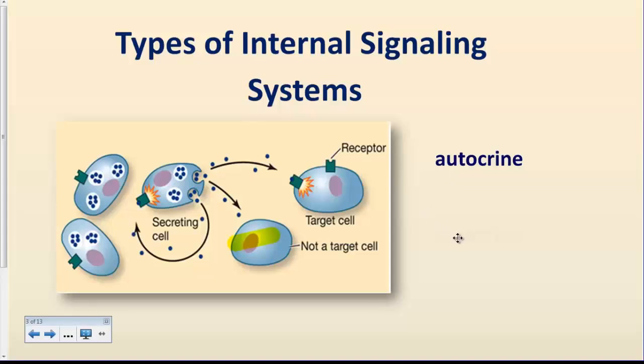There's a second group of signaling molecules that are released and they act on cells that are in the immediate vicinity of from where they were released. So in that case here, if we look at this cell, it releases signals that would act on a cell in the immediate vicinity here.